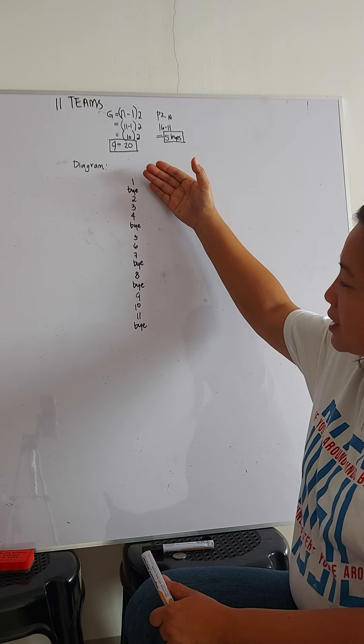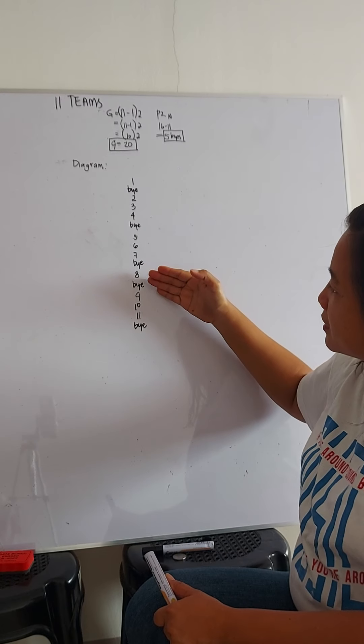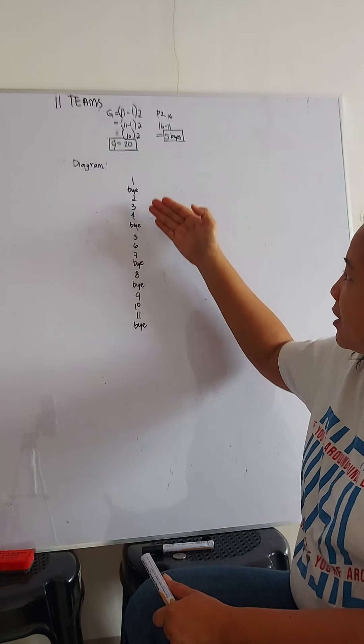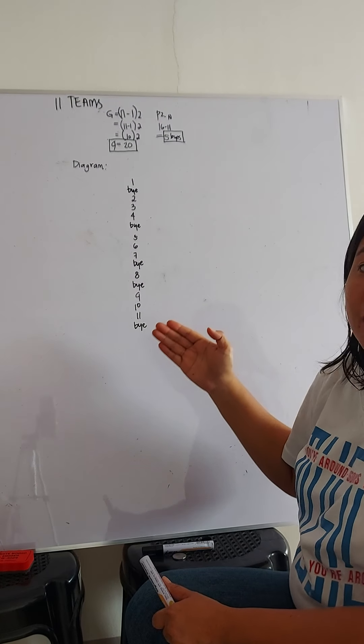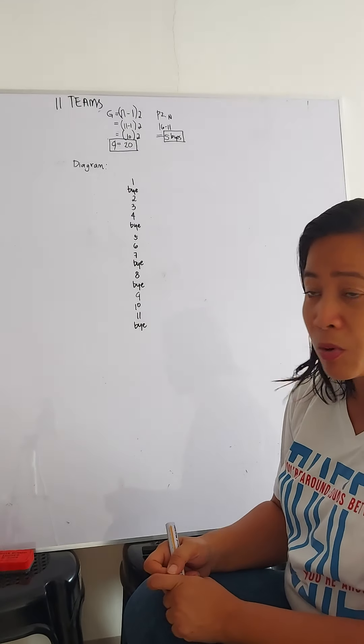So, we have team 1 as our bye, team 4, team 7, team 8, and team 11. Basically, these teams will be our waiting teams for the next round. So let's close the bracket.